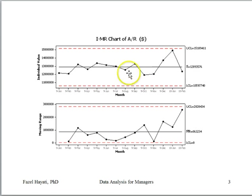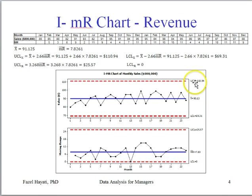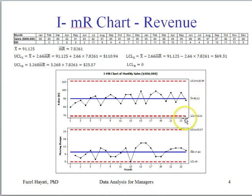This is the same chart, and again the process is in statistical control and predictable. This is another example of a monthly revenue using an individual and moving range chart. Here we show how to calculate the upper and lower control limits for both the upper and lower charts. This process is in statistical control and predictable — the monthly revenue average is about $90 million, varying between $70 to $111 million. This prediction can be used as the basis of forecasting.